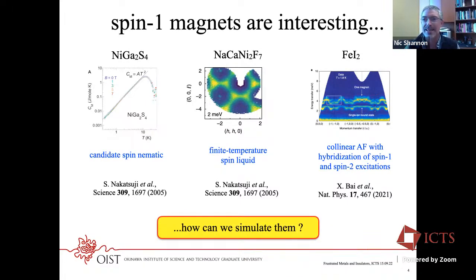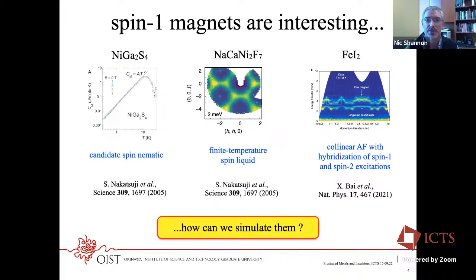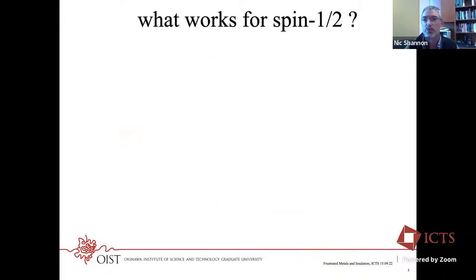If these magnets are interesting, we'd like to be able to simulate them and say something about them. But then it gets hard. Fully quantum simulations for spin-half are already hard, and the Hilbert space grows faster for spin-one. So what can we do?